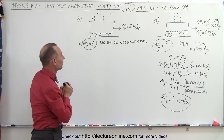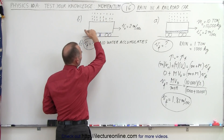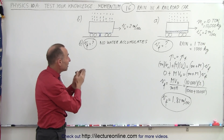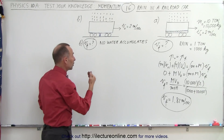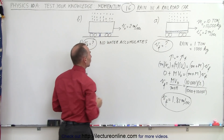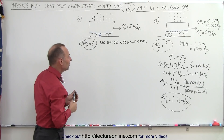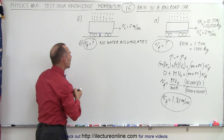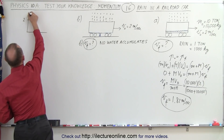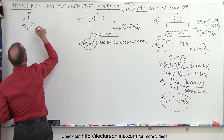For Part B, the same 1,000 kilograms of rain falls in the same time period but does not accumulate — it runs out. However, before it can run out, it must gain the same speed as the railroad car. The car starts at 2 m/s but goes slower and slower as rain enters and takes momentum away. If we graph velocity over time, it starts at 2 m/s and decreases to a lower final velocity.